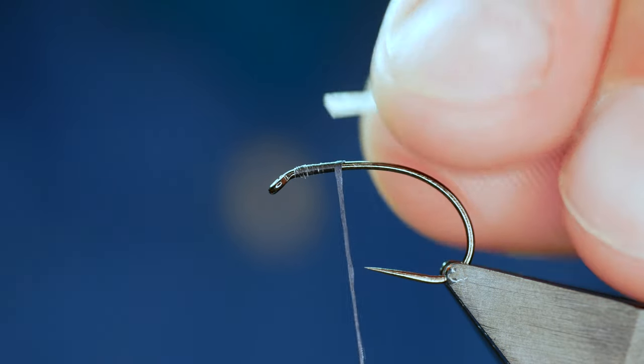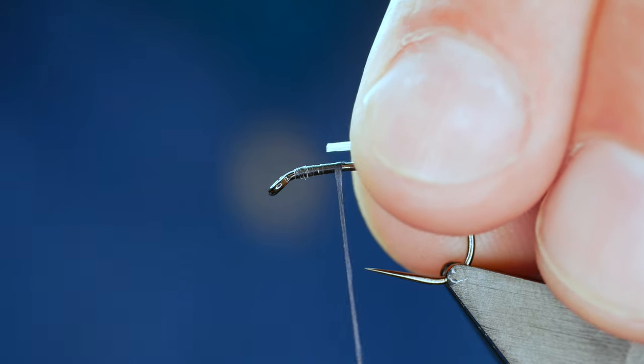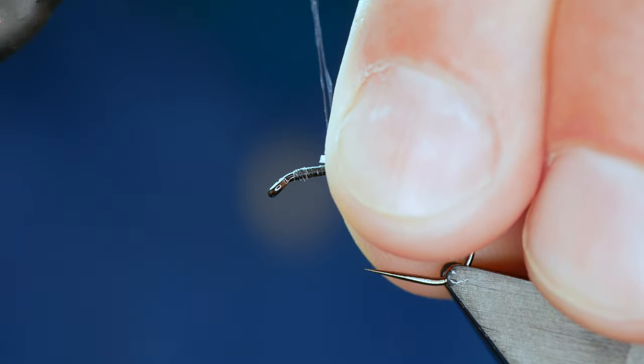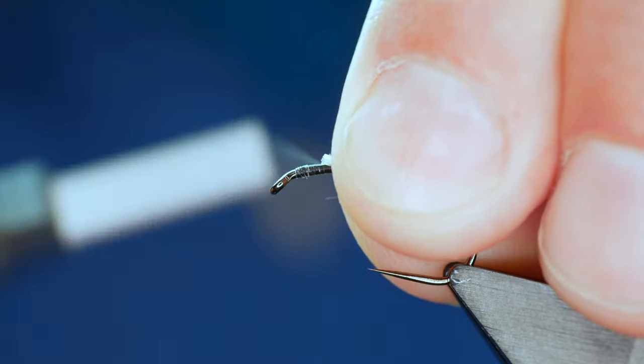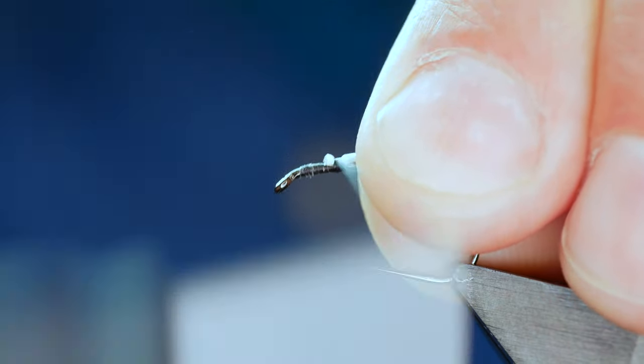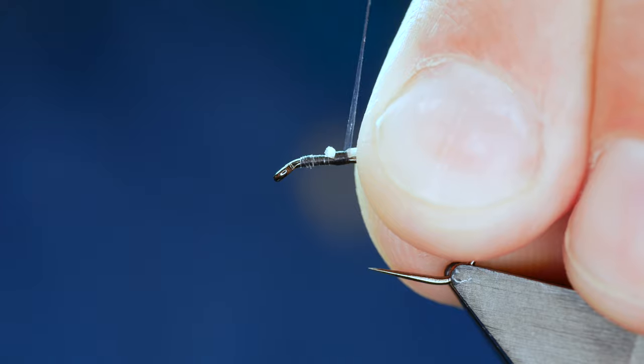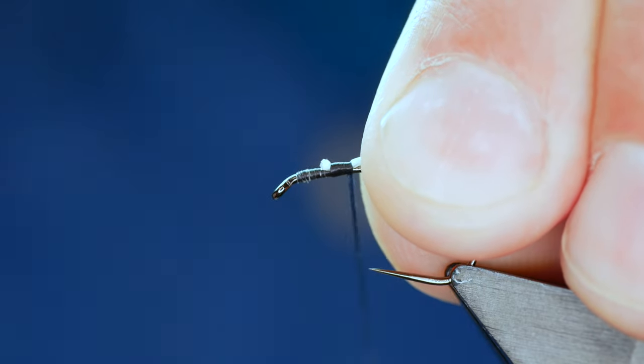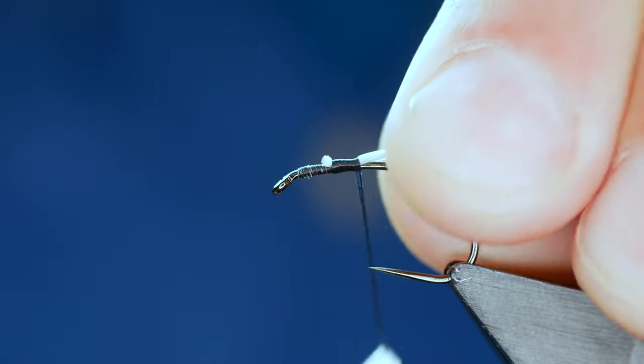So I've got the end here and what I want to do is I've pre-waxed my thread before I cast it on. I want to just get quite a tight pinching loop onto the flexi floss.